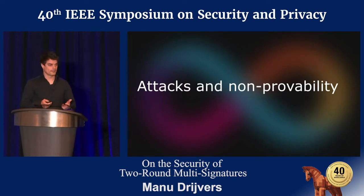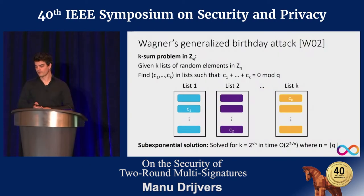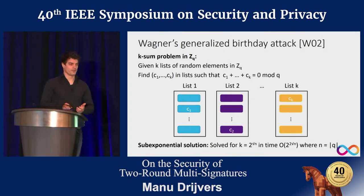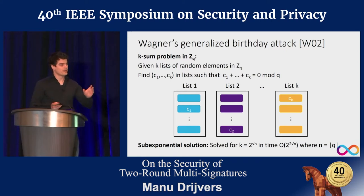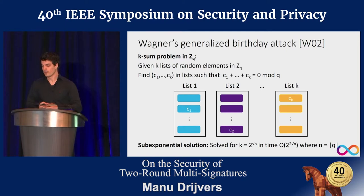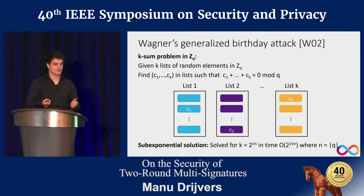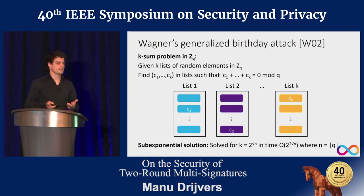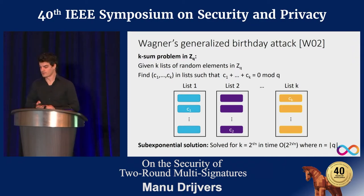To demonstrate the attacks, we use Wagner's algorithm, which solves the so-called K-sum problem. Given K lists of random integers modulo Q, the challenge is to find one element in each list such that they all sum to zero modulo Q. Even for a 256-bit Q this seems very hard, but Wagner's algorithm solves it in sub-exponential time — and this is what we use for our attacks.